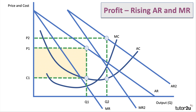The new profit-maximizing output at Q2 allows the monopolist to charge a higher price, P2. The cost per unit looks pretty much the same, so I've kept it at C1. Because the firm is now selling more at a higher price with costs the same, we can show the new level of profit — the orange area shows the increase in profits. The new profit is P2 minus C1 multiplied by Q2.